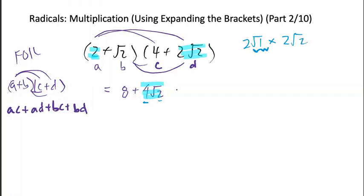All right, let's get going. Now we have root 2 times 4, which would be 4 root 2. And then root 2 times 2 root 2, and that would be 2. Let me kind of show you.